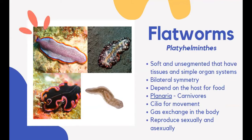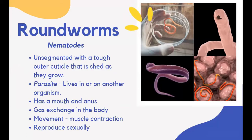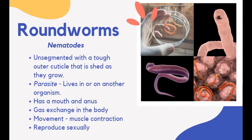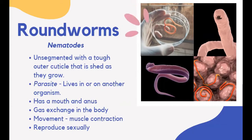Roundworms, or nematodes, are unsegmented worms with a tough outer cuticle that is shed as they grow. Ascaris, hookworms, and pinworms are roundworms. Hookworms and pinworms are parasitic nematodes harmful to other animals. A parasite lives in or on another organism and gets its nutrients from it. Nematodes have a digestive tract with a mouth and anus. They feed on smaller animals, algae, diatoms, and fungi. Gas exchange takes place through diffusion in their skin. They have a simple nervous system of two nerves running through their bodies.